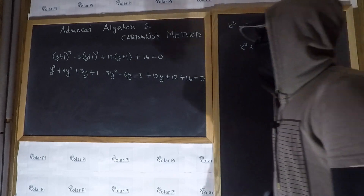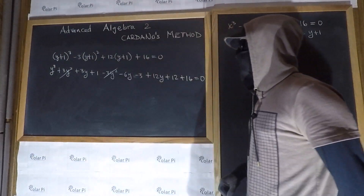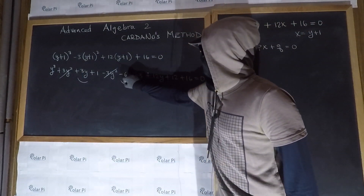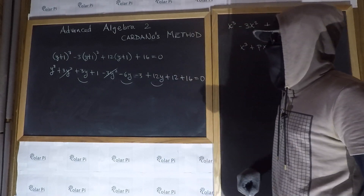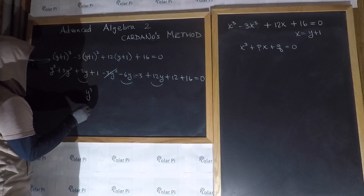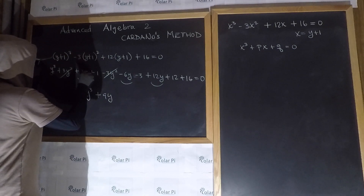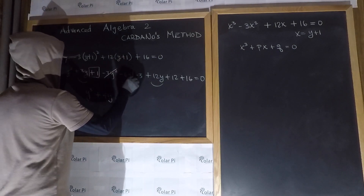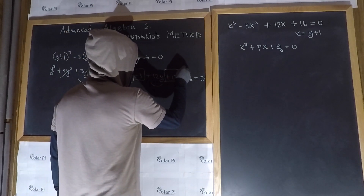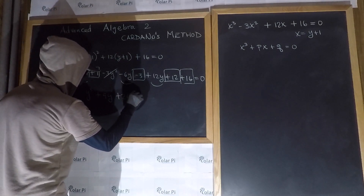So as we said, this substitution should get rid of the square term — and that's that. The y² terms cancel. Now this term, this term, and this term combine to give 9y. So we have y³ + 9y. And then the constants: 1, minus 3, plus 12, plus 16 give positive 26. So we have y³ + 9y + 26 = 0. Equals 0.